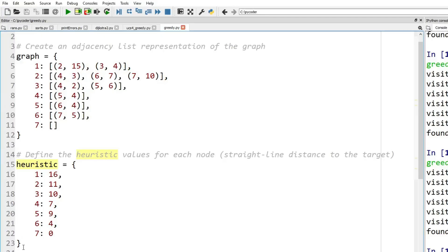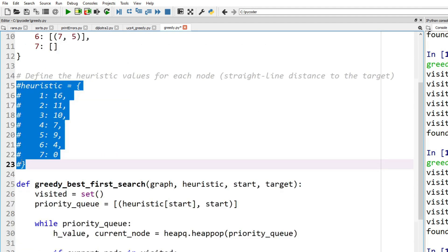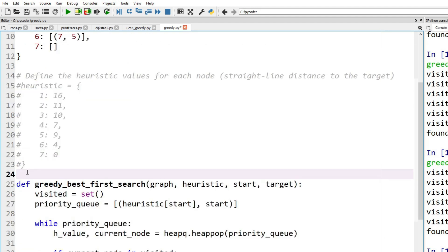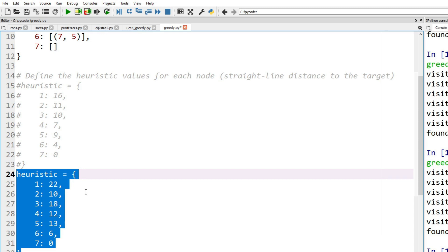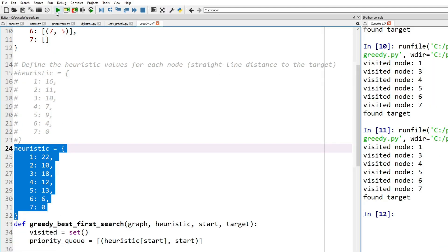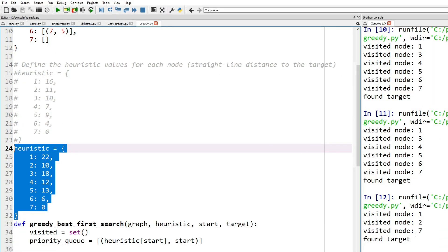Now if we change our code to the second example, let's take out the heuristic from before, and now let's add the new one. So our new heuristic with the different distances—when we run it, we can see we visit node 1, node 2, straight through to the target 7.